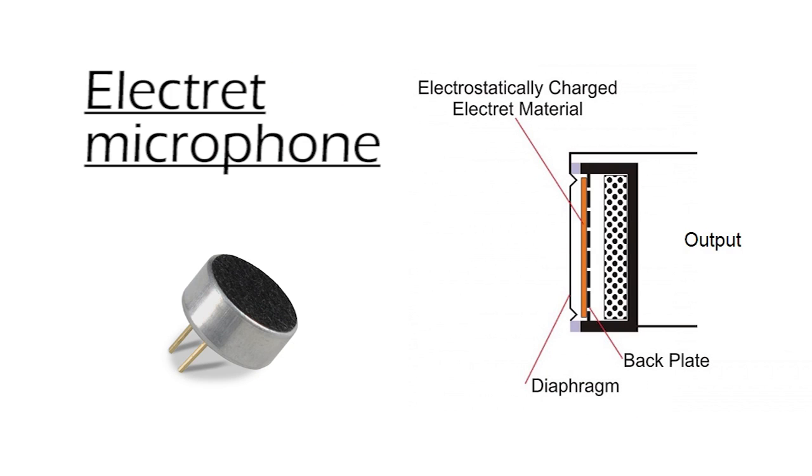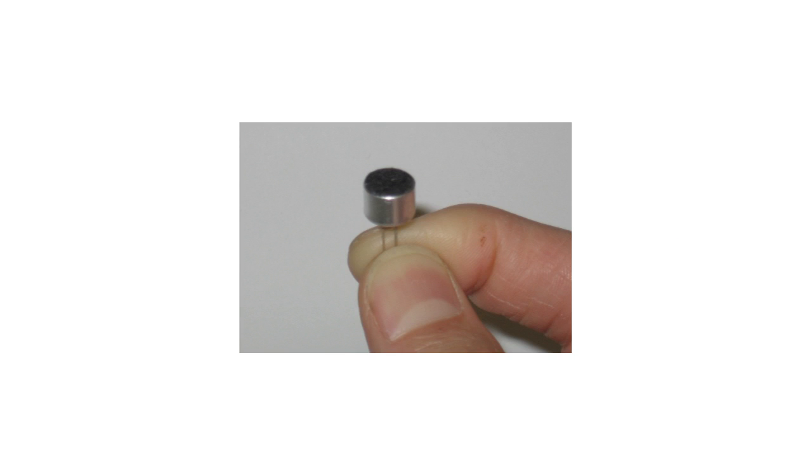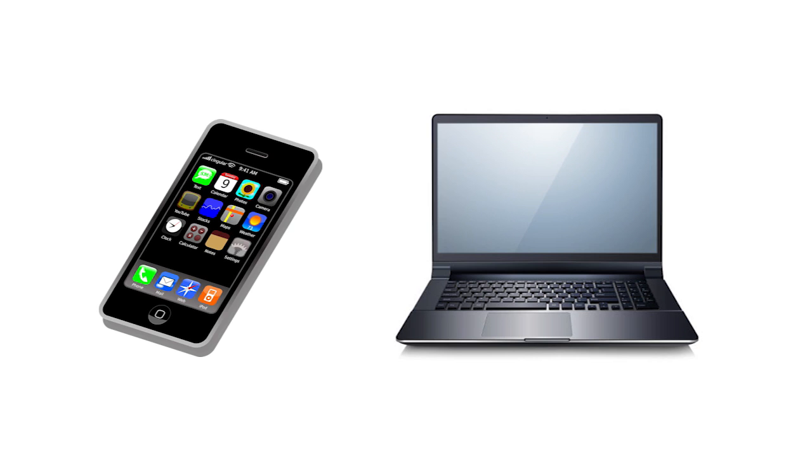Electret microphones are capacitor microphones that have a film of permanently charged material adhered to one of its plates, removing the need for a power supply. Because of the quantity and small size in which they can be produced, they are used in electronics such as cell phones and laptops.